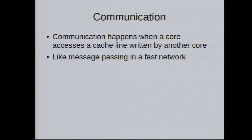Now, communication. This is when a core accesses a cache line written by another core — multiple cores sharing and passing data. Often when people talk about languages like Rust or Go, they say 'we don't do shared memory, we only pass messages.' But in my mind, this is the wrong way to think about it. Even if you write to a cache line that somebody else reads, it's message passing too — because there's a message going over a network. It's a really fast network, but it's a network and it acts like a network. So in your mental model: bouncing cache lines is message passing.